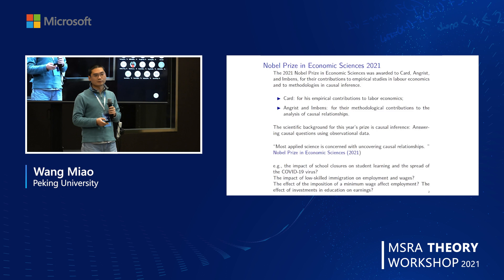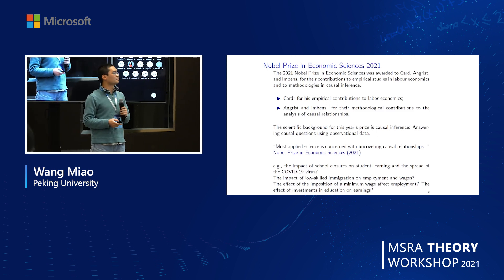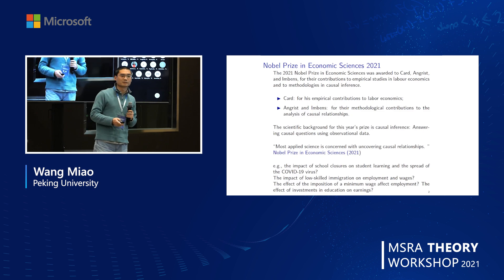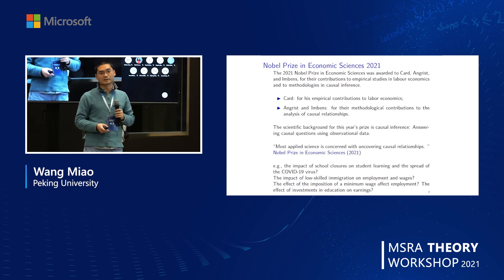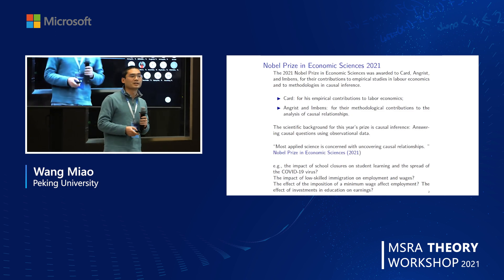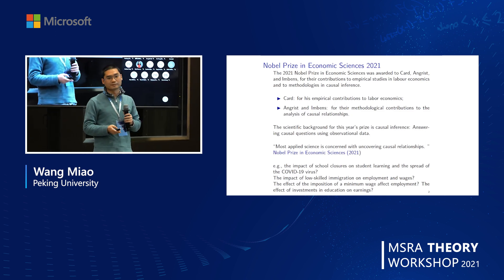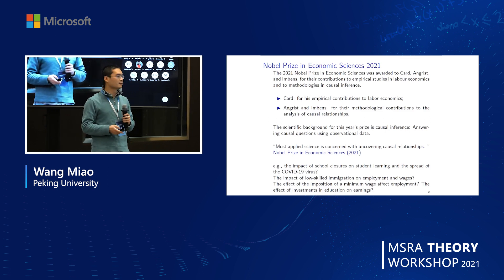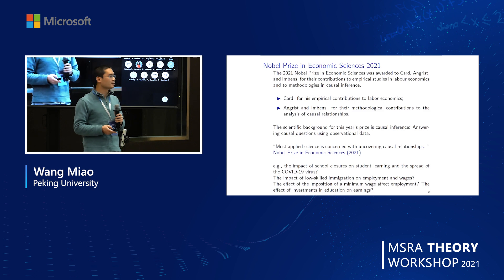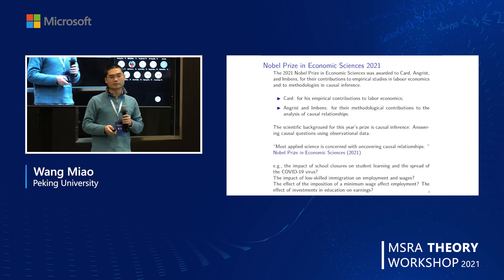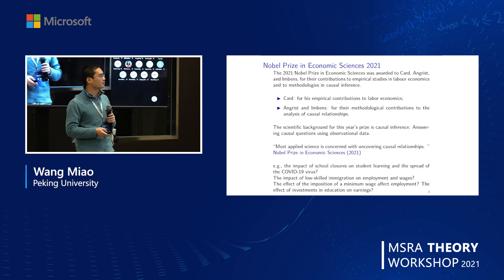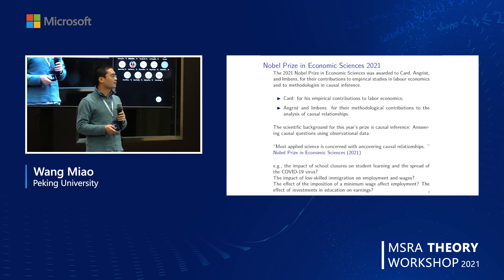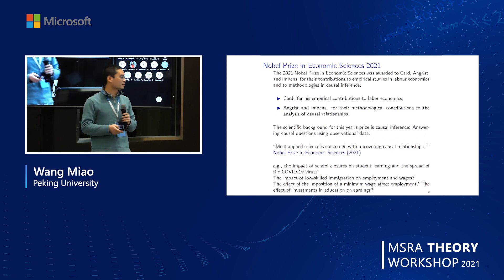The scientific background of this year's Nobel Prize is causal inference, particularly answering causal questions using observational data. Most applied science is concerned with uncovering causal relationships. For example, we are interested in the impact of school closure on student learning and the spread of COVID-19. In labor economics, people are interested in the impact of low-skilled immigration, the effect of minimum wage, and the effect of education on earnings.